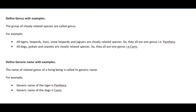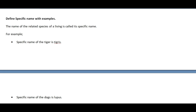The name of the genus of a living being is called its generic name. For example, the generic name of tiger is Panthera and the generic name of dog is Canis. Similarly, the name of the species of a living being is known as its specific name. For example, the specific name of tiger is 'tigris' and the specific name of dog is 'lupus.'